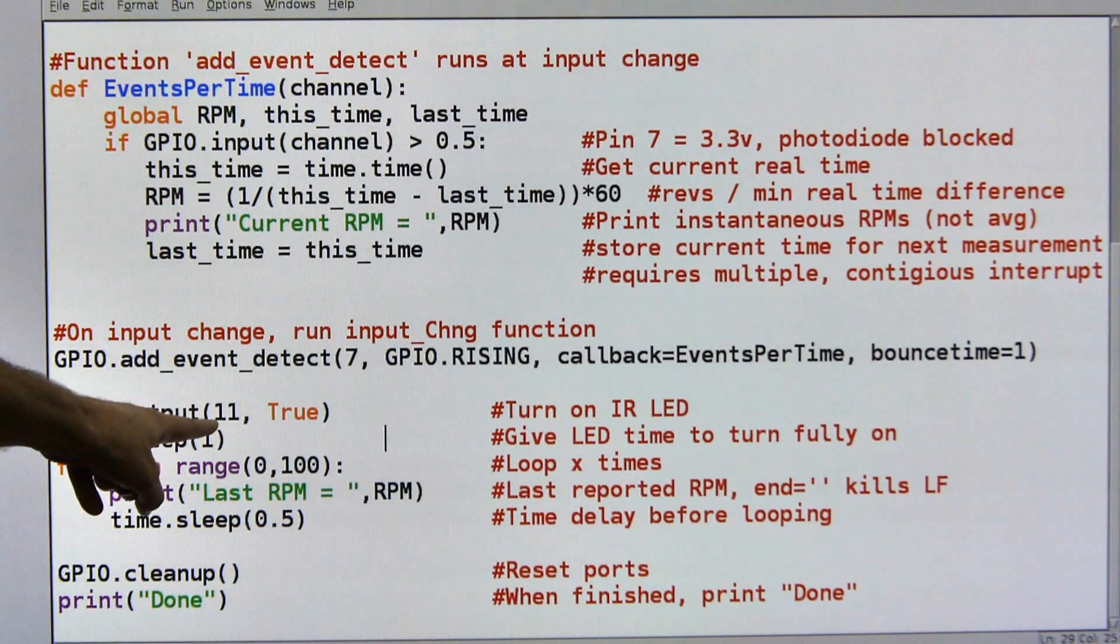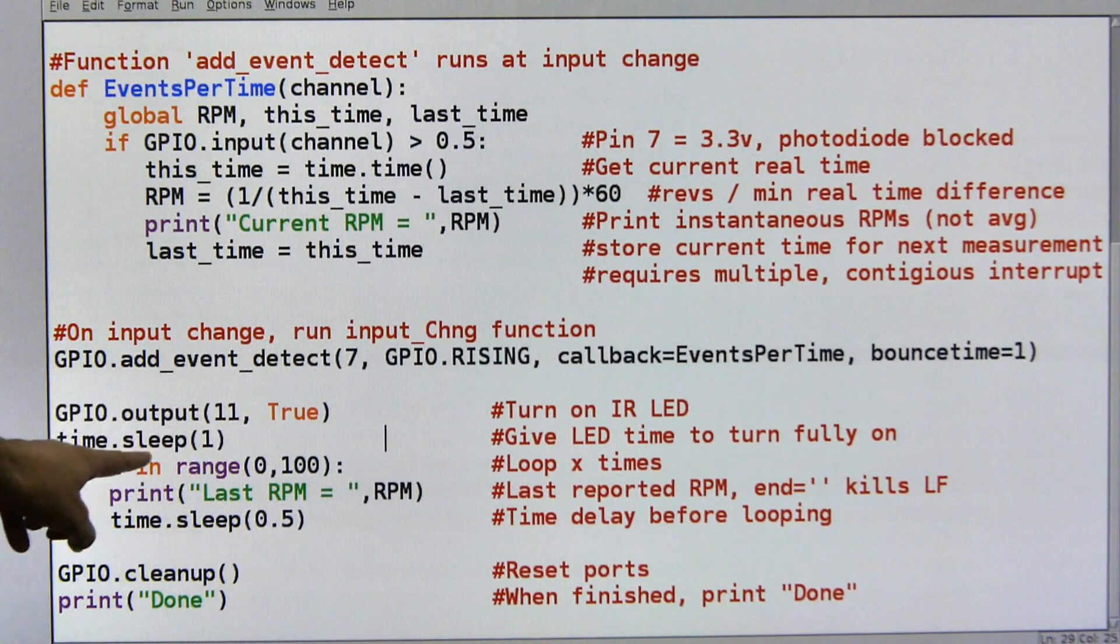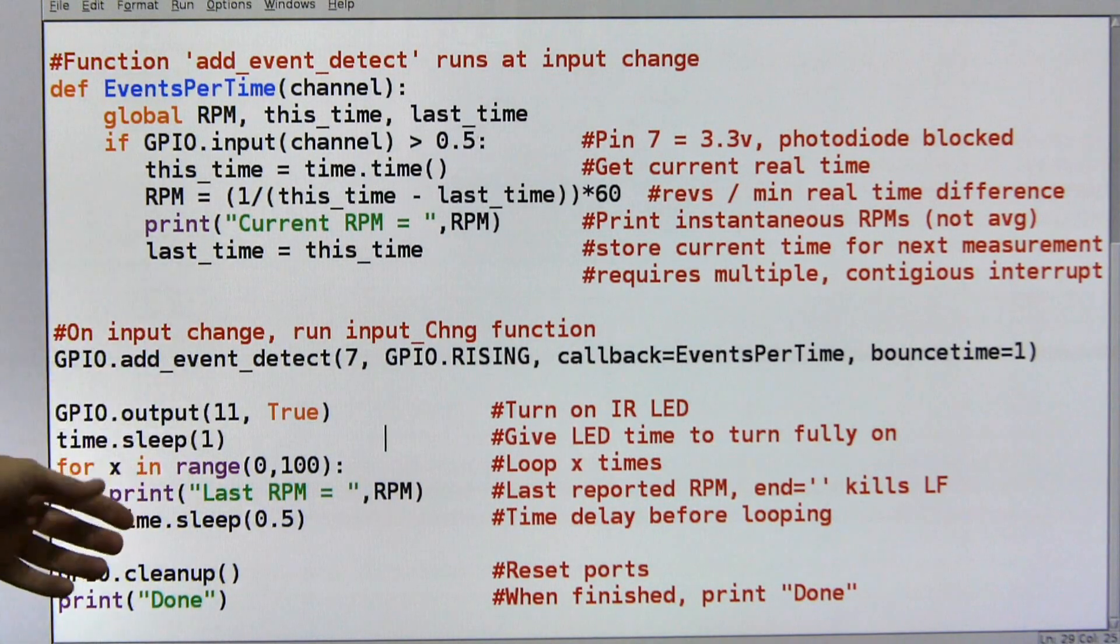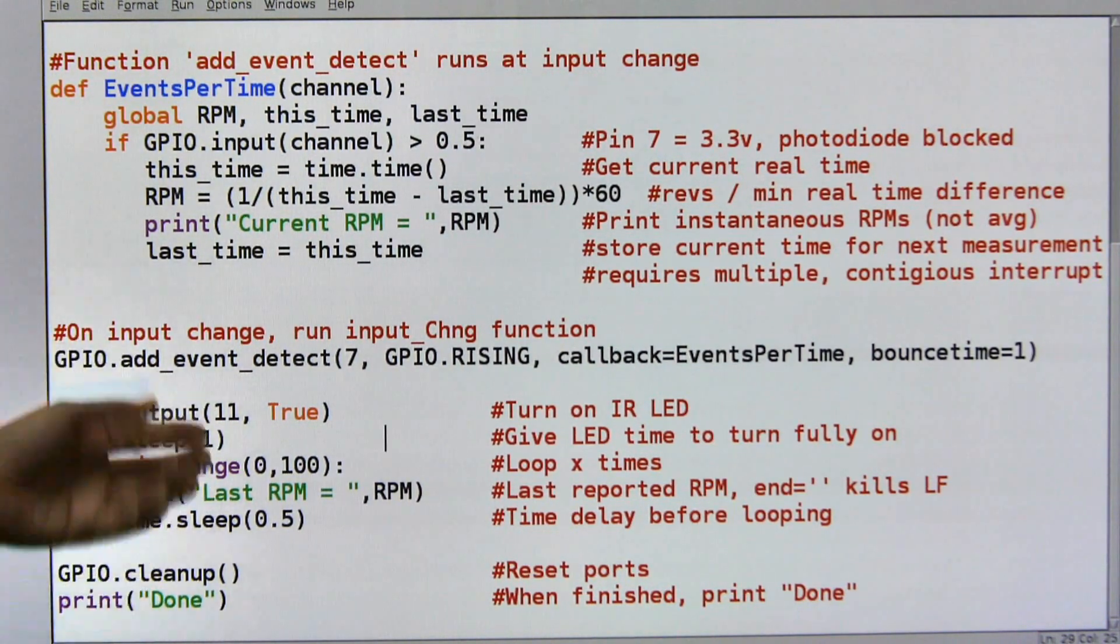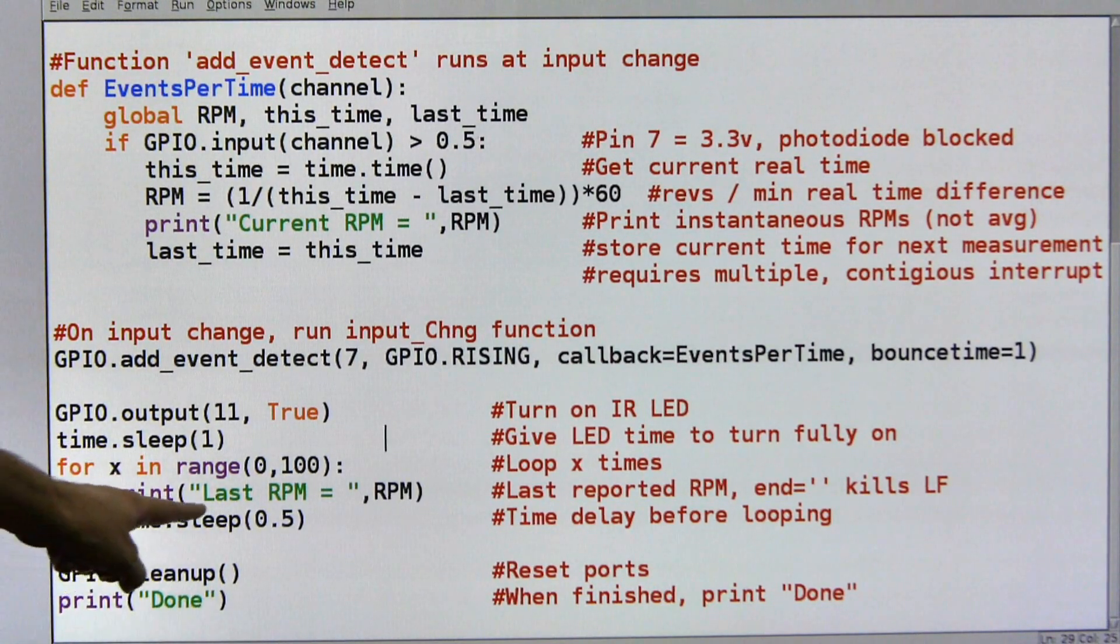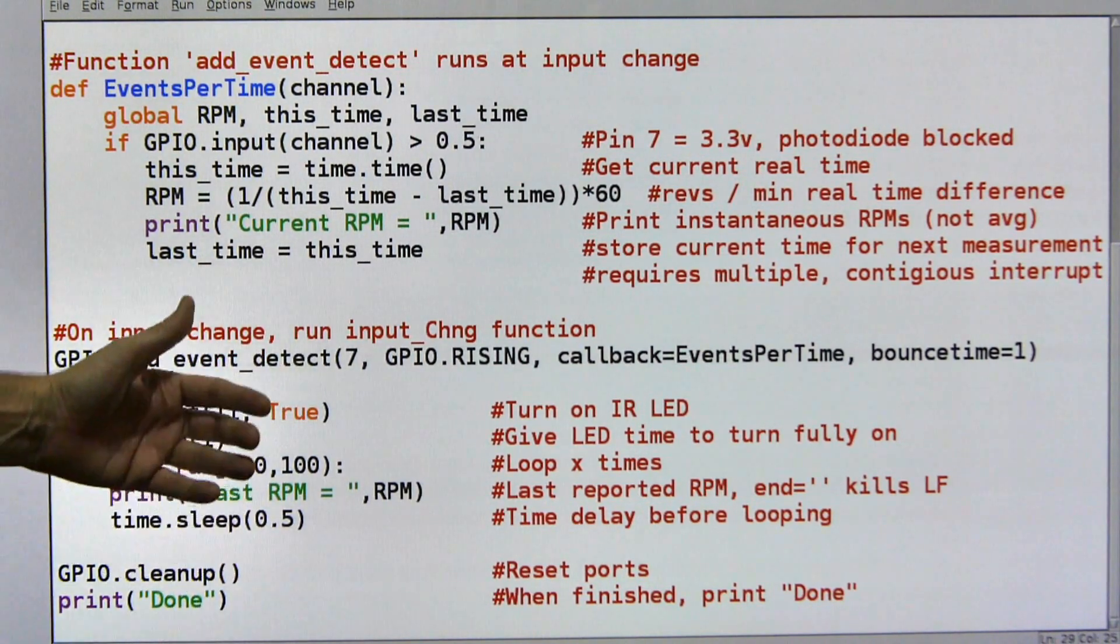Once again, just turn on pin 11, that's the LED, I need to turn it on and I give it some sleep time in order to allow it to come up to full power before I start measuring. And here I did a for x in the range of 0 to 100, you could use a while statement, just say while true and it will lock into an infinite loop. I don't like to do those but okay. So then I'm going to come down here and I'm going to print the last RPM that I saw, the last RPM that I measured, so it's kind of like memory.